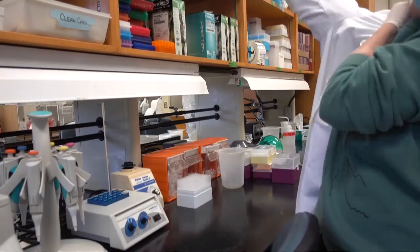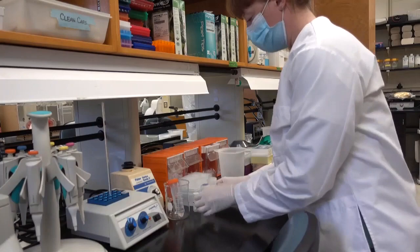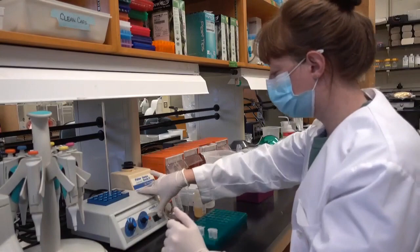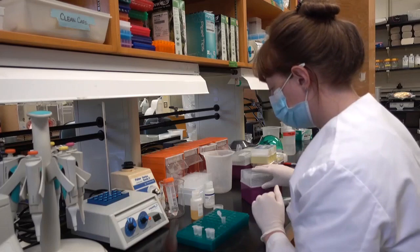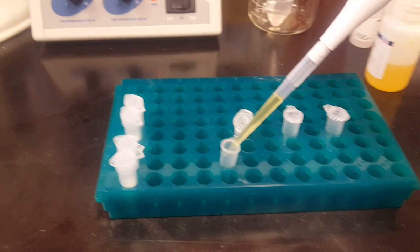Here you can see me getting set up and getting all the buffers and other supplies that I'm going to need for this process out and ready to go. All of these buffers need to be added to my sample in very specific amounts. So to do this, I use a pipette, which allows me to measure these amounts of liquid accurately. And now you can see me mixing my sample together using a machine called a Vortex. And then I'm going to be incubating it at a specific temperature on a heat block.